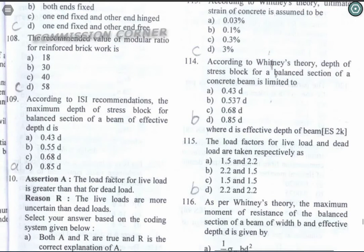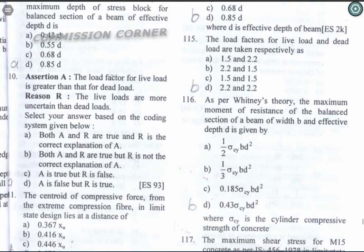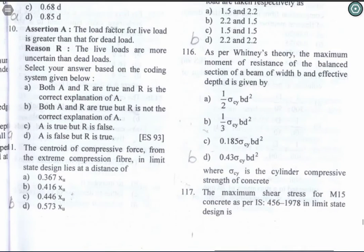Question 115: The load factors for live load and dead load are taken respectively as 2.2 and 1.5. Option B is the correct answer. Question 116: As per Whitney theory, the maximum moment of resistance of a balanced section of a beam of width B and effective depth D is given by (1/3) × sigma_cy × B × D². Option B is the correct answer. Here sigma_cy is the cylinder compressive strength of concrete.